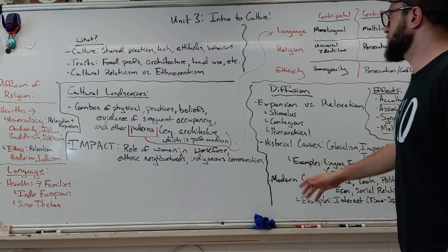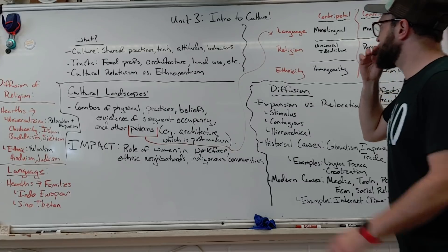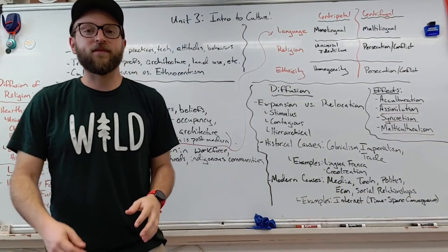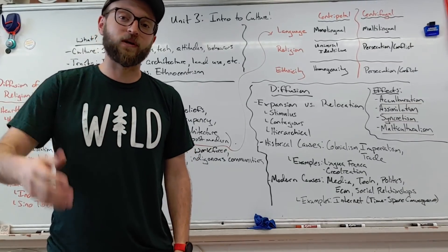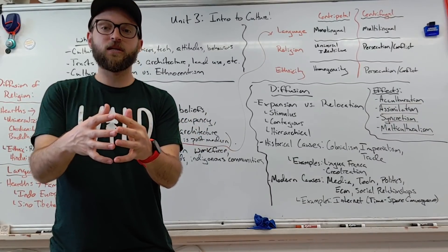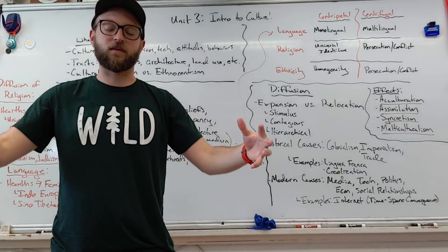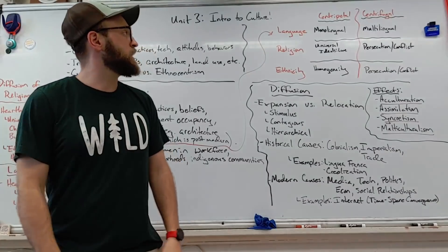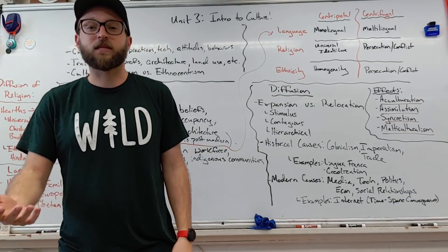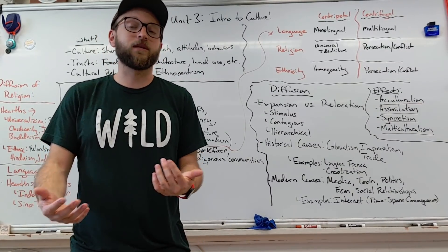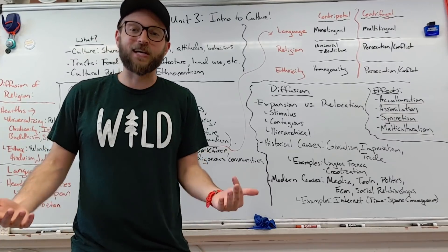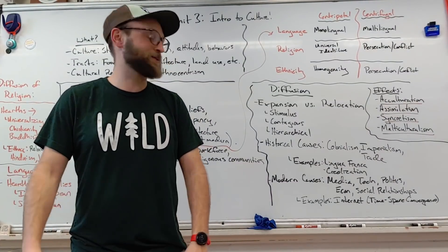So then we jump into diffusion. Here's where things get interesting. Beginning with language, religion, ethnicity. For all three of these, you have to be able to divide centripetal versus centrifugal forces. Centripetal would be forces that unite a community. Centrifugal with an F forces the community apart, causes disunity. So an example would be with language, if everybody's monolingual, they speak the same language, then clearly people can communicate. They can bridge their differences. Maybe they can trade. And economic co-dependency does jive pretty well for most of the world.